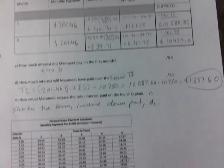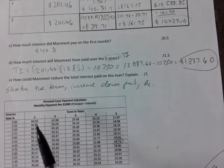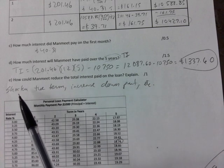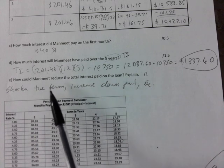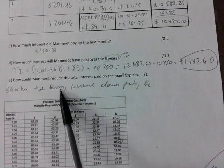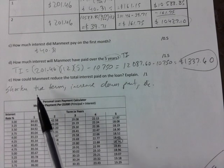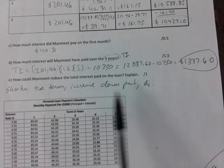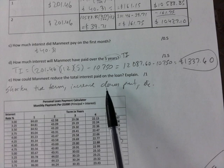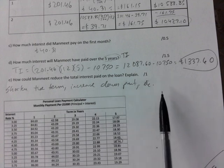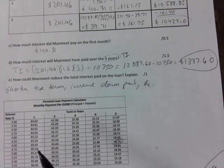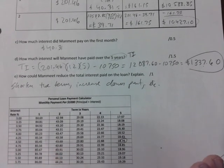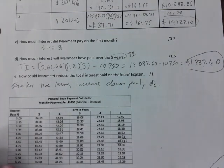How could the buyer reduce the total interest paid on the loan? You can shorten the term — instead of five years, go with four or three years. You could increase your down payment, which means borrowing less money and paying less interest. You can also make additional payments, or shop for a lower interest rate — though sometimes the question specifies other than getting a lower interest rate.